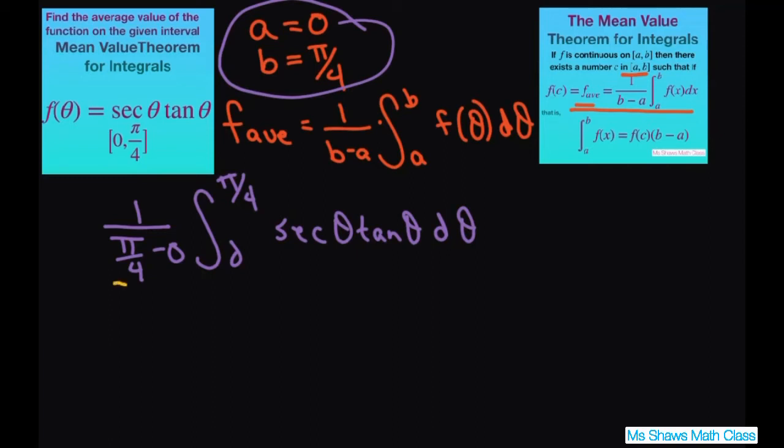So this piece here is 1 divided by pi over 4. That just equals 4 divided by pi. So you have 4 divided by pi.